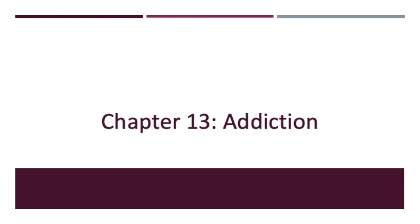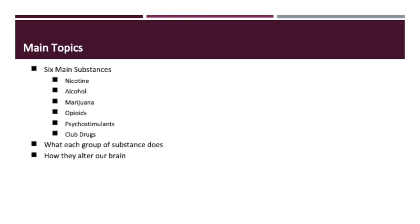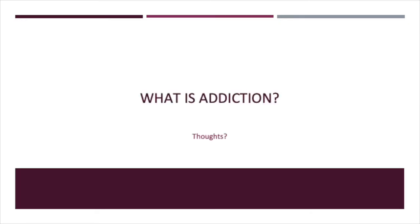Hi everyone, my name is Brian Sanchez. I'm a student here at UMass Medical School and today I'm going to be teaching you guys about addiction. Before we begin, I first want to talk about what we're going to cover in today's talk. I'm going to go over six main substances: nicotine, alcohol, marijuana, opioids, psychostimulants, and club drugs, along with how each of them alters our physiology and our brain. I want to start by talking about what addiction is.